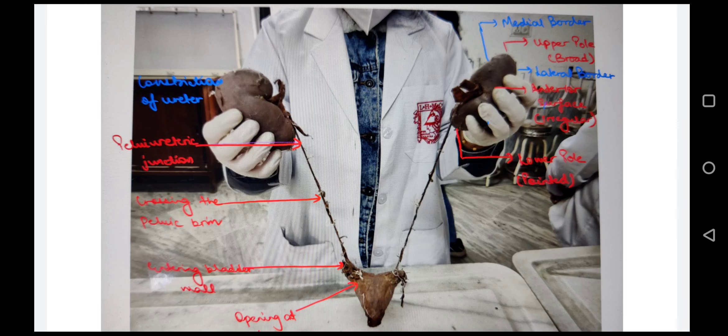Now let's start with the abdomen soft parts. First we can look at kidney, ureter, and the urinary bladder. We will see the morphology of kidney — first of all the anatomy.